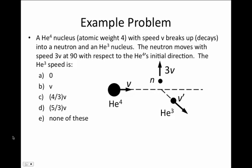Suppose the neutron moves with speed 3v — where v is the initial speed of the helium-4 nucleus — at a direction 90 degrees with respect to helium-4's initial direction. We can then solve for the speed v prime of the helium-3 nucleus.